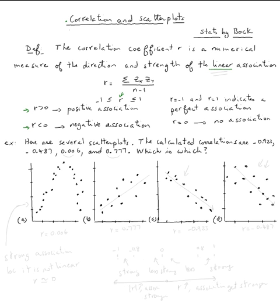Alright, so let's answer this question. Here are several scatterplots. The calculated correlations are negative 0.923, negative 0.487, 0.006, and 0.77, which is which?